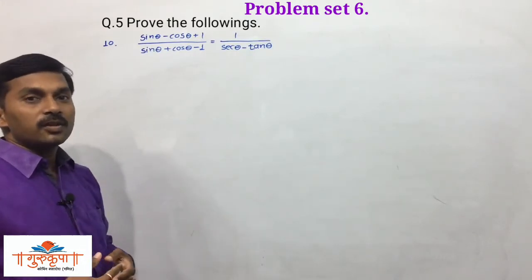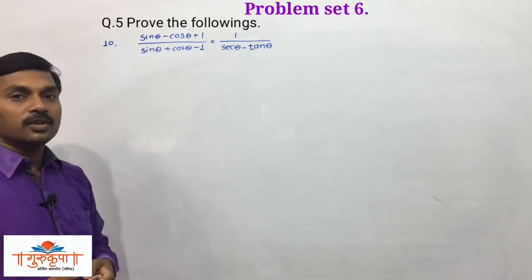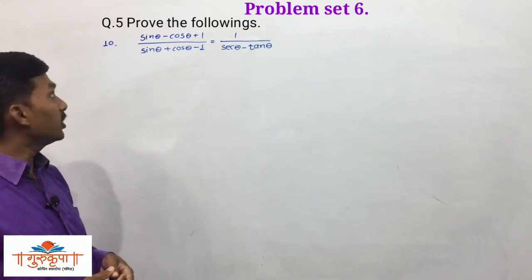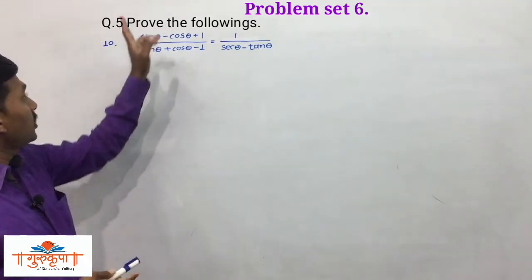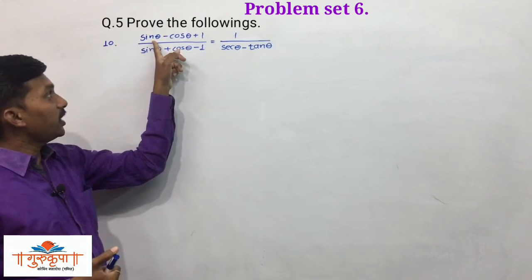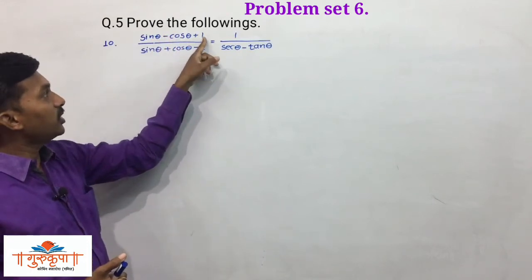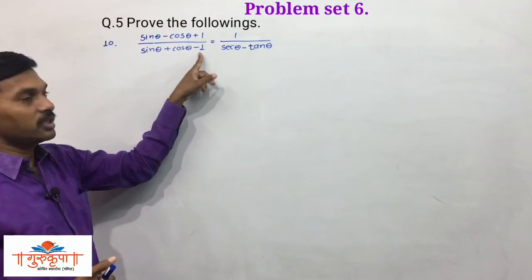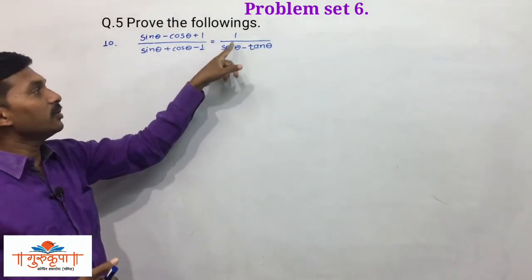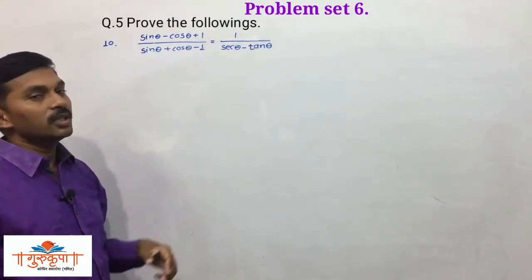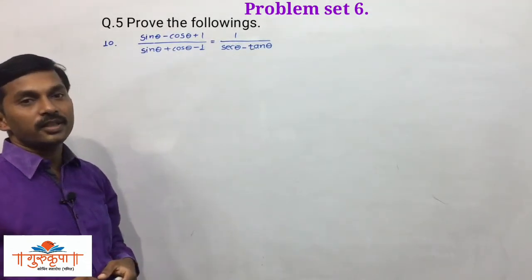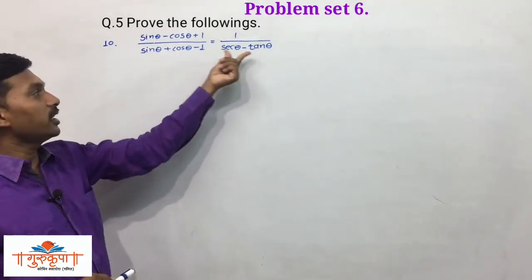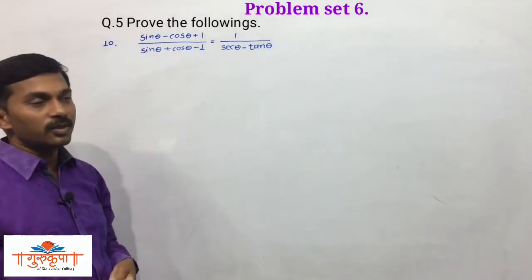Example number 10 from question number 5 of problem set 6. The question is: we have to prove that (sinθ - cosθ + 1) upon (sinθ + cosθ - 1) is equal to 1 upon (secθ - tanθ). We have to prove that the LHS and RHS are equal.